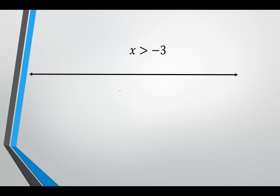x greater than negative 3. Locate negative 3, and we want x greater than negative 3, so it will be all to the right of negative 3. Do we include negative 3? No, because negative 3 is not greater than itself. When it's strictly greater than, we use parentheses. For the interval notation: parentheses, negative 3, comma, positive infinity, close parentheses.